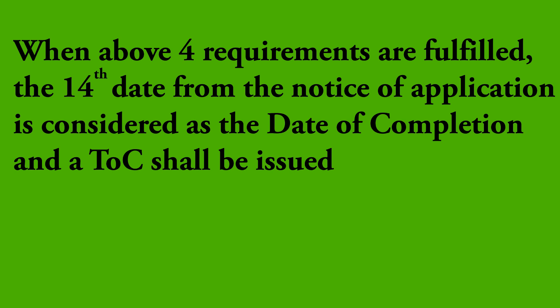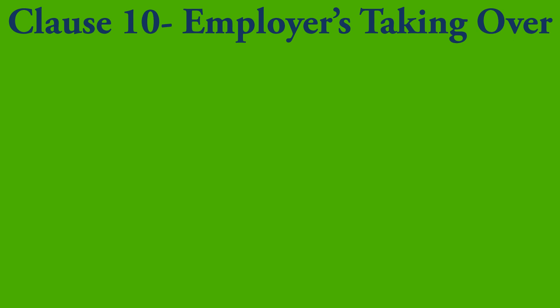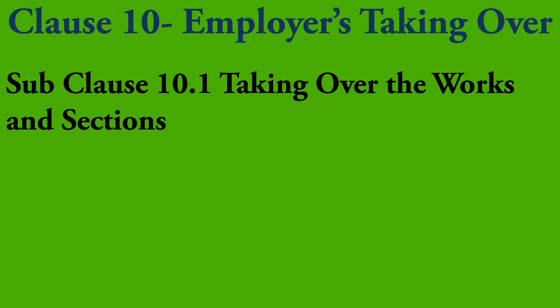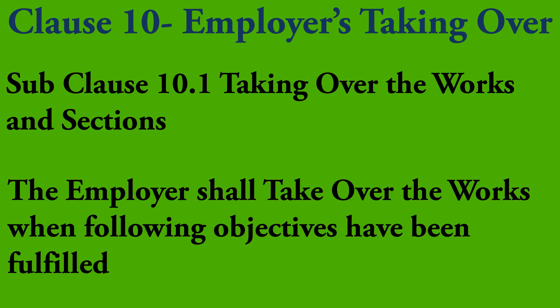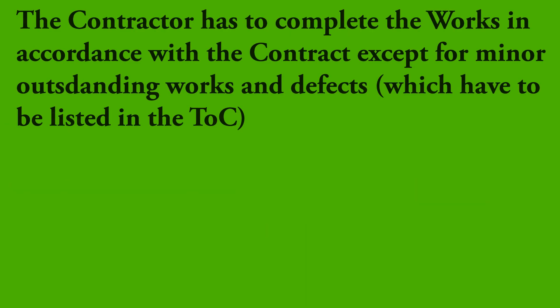There are a lot of details here, so we'll carefully go through the entire clause 10, Employer's Taking Over. Sub-clause 10.1, Taking Over the Works and Sections: the employer shall take over the works when all the following objectives are fulfilled. First, when the works have been completed in accordance with the contract, except for minor outstanding works and defects which will not substantially affect the safe use of the works or section for their intended purpose. These outstanding works and defects shall be listed in the TOC, and the taken-over works shall be safe to use until outstanding works are completed and defects are rectified.